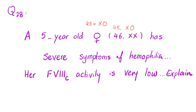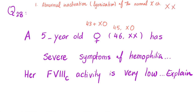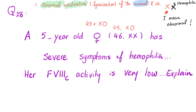So what's the correct answer? We have two correct answers, or two possibilities. The first possibility is abnormal inactivation, or lyonization, of the normal X chromosome. Normally, females have XX but they only need one X, so they inactivate one of them. If I have an abnormal and a normal X, I should inactivate the abnormal one. But if I have abnormal lyonization of the normal X chromosome, I've inactivated the normal one, and now the abnormal chromosome is active, causing symptoms of hemophilia.